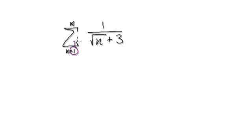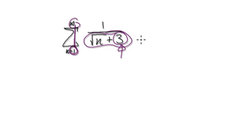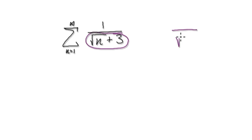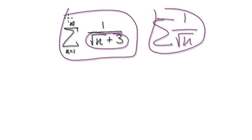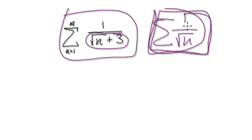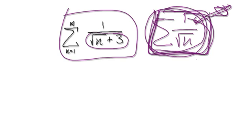So to do this, as n tends to infinity — as n gets bigger and bigger — if you look at the denominator, you're adding on an insignificant amount. So when n gets very, very big, you can think of the denominator as being square root of n. So we should compare this to 1 over square root of n, and you should be able to recognize straight away that this series is going to diverge.